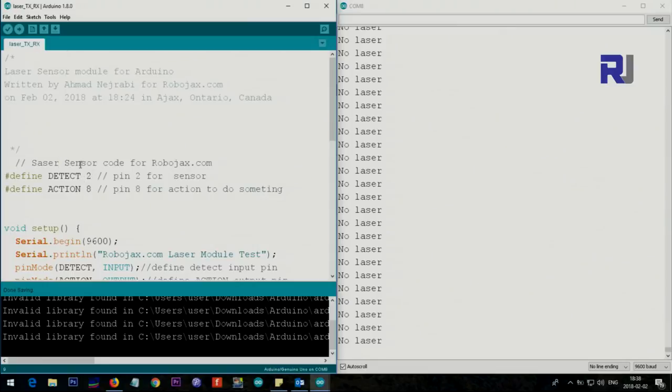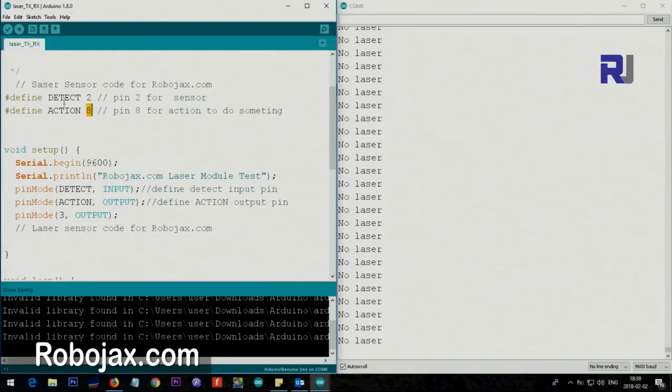Let me explain the code here. The input, this number two, is the input from receiver of laser sensor. We just assign number two so pin two is there. Pin eight is an action pin which is connected to the buzzer in this case. These two variables will be used instead of the numbers two or eight, so I will use detect and action.